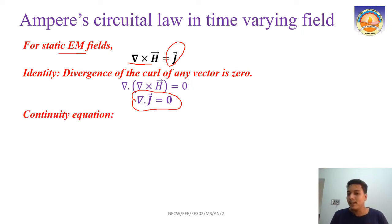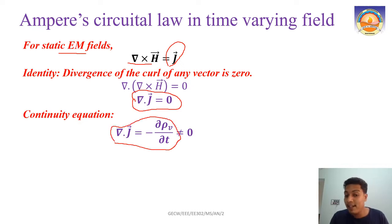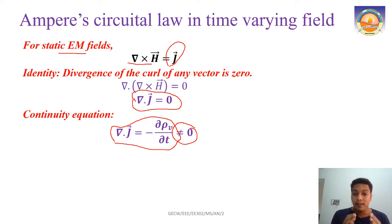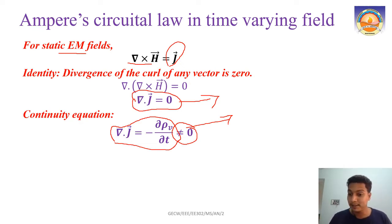There is a contradiction when you come to the time-varying field. From the continuity equation, which we learned a few classes ago, del dot J equals minus ∂ρv/∂t in a time-varying field — so it is not equal to zero. There is clearly some problem: the static Ampere's law suggests del dot J is zero, but the continuity equation for time-varying fields says it is definitely not zero.